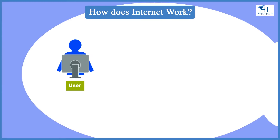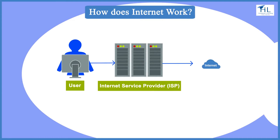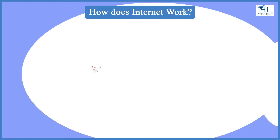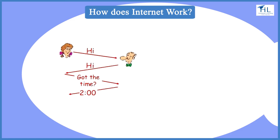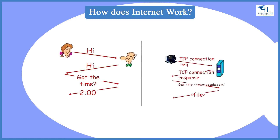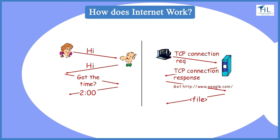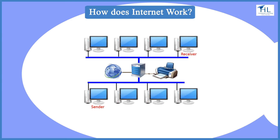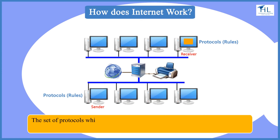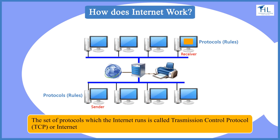Users are provided access to the internet by internet service providers. Just as humans have conversations to agree on things, computers have conversations to decide what they are doing — those conversations are called networking protocols. Every network follows a set of rules called network protocols to share and run data efficiently. The set of protocols which the internet runs is called Transmission Control Protocol or Internet Protocol, TCP/IP.